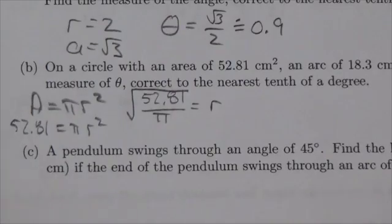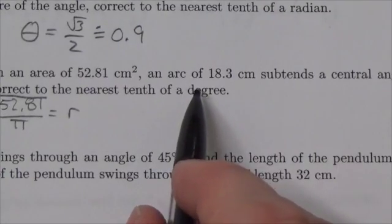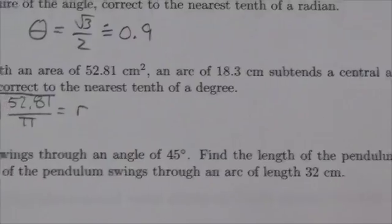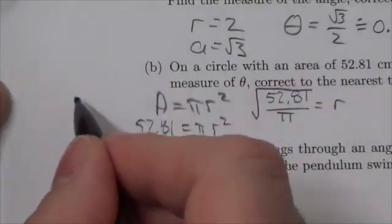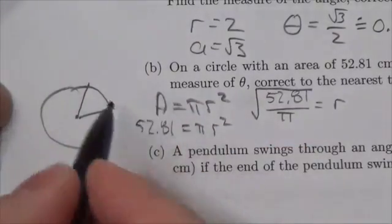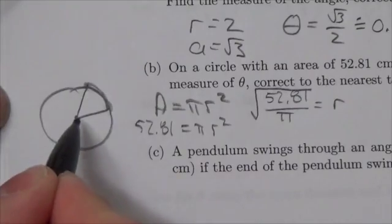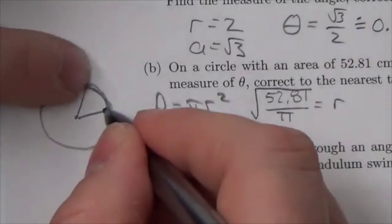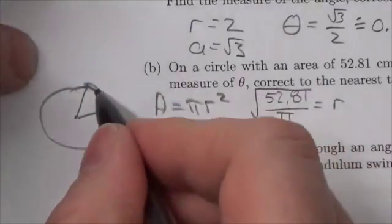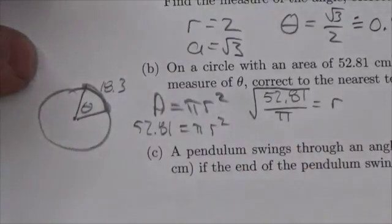What I'm trying to do is get the angle, because I know I've got an arc of 18.3 centimeters subtending that central angle. When I say subtending — here's my angle right here — the length of this arc subtends that angle, basically connecting the two radii. So this is my 18.3, and I'm looking for that angle right there.